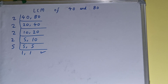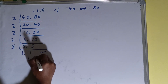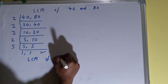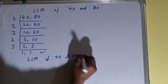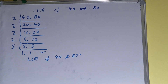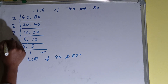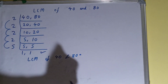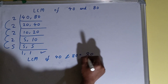Once we get 1 and 1, we stop. The LCM of 40 and 80 is found by multiplying all the values on the left-hand side: 2 × 2 × 2 × 2 × 5, which gives us 80. So the LCM of 40 and 80 is 80.